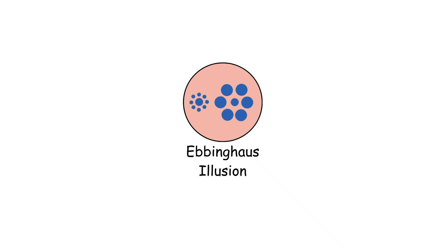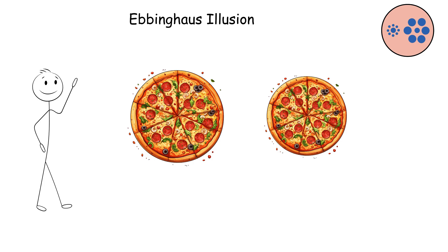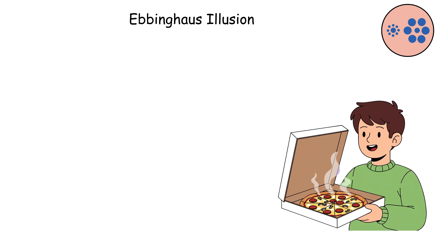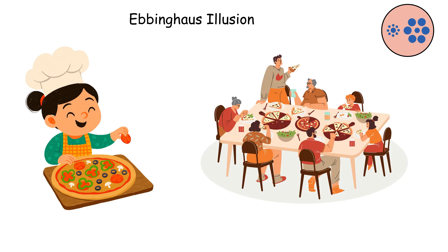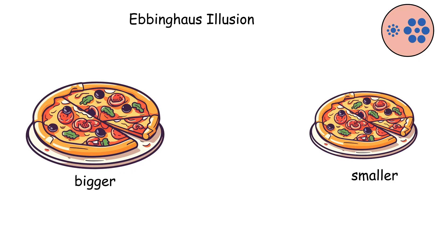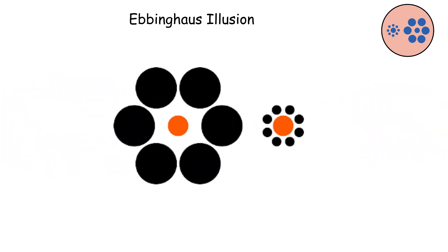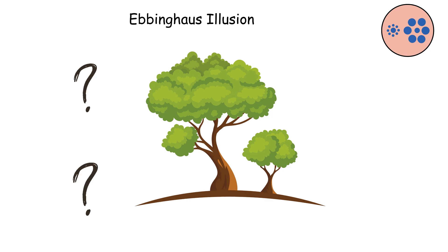The Ebbinghaus Illusion Titchener Circles. Let's say you're shopping for pizza and you see two medium pizzas, one surrounded by tiny personal pizzas and another surrounded by extra-large family-sized pizzas. Even though both medium pizzas are identical, the one next to the tiny pizzas looks way bigger, while the one next to the giant pizzas looks smaller. That's the Ebbinghaus Illusion in action, and it proves your brain can't judge size without comparing it to everything around it.